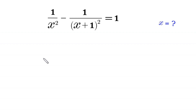Hello, welcome to how to solve this very nice algebra equation: 1 over x squared minus 1 over (x plus 1) whole squared is equal to 1. We need to find all possible values of x.